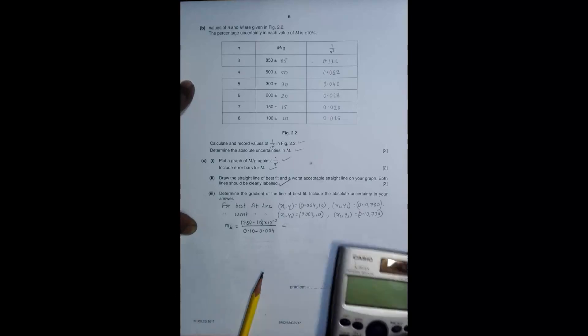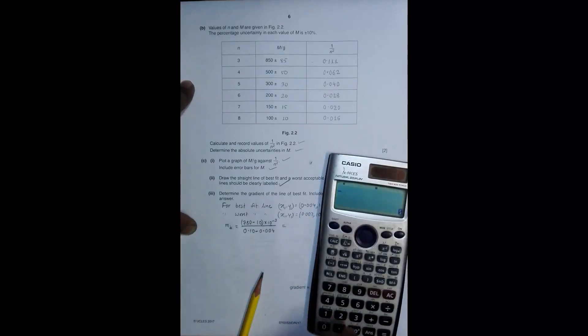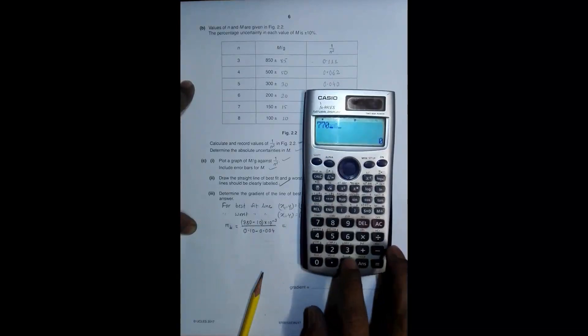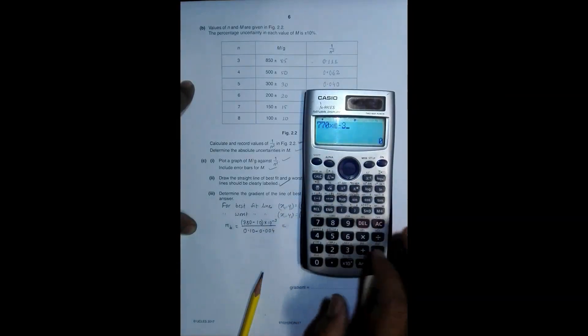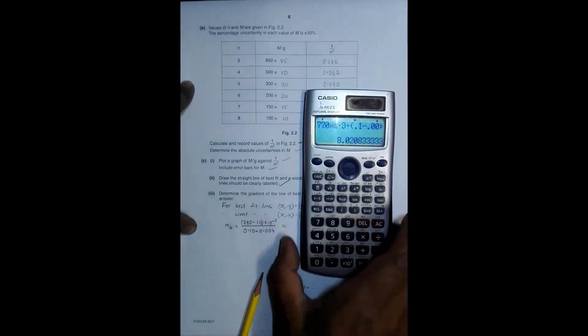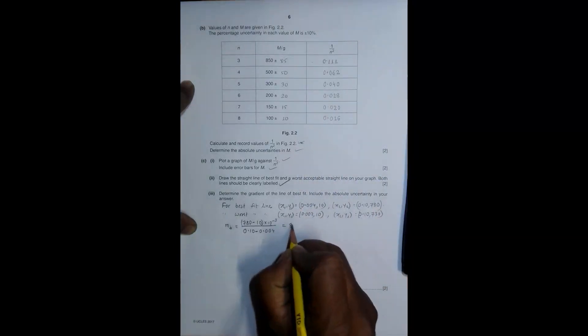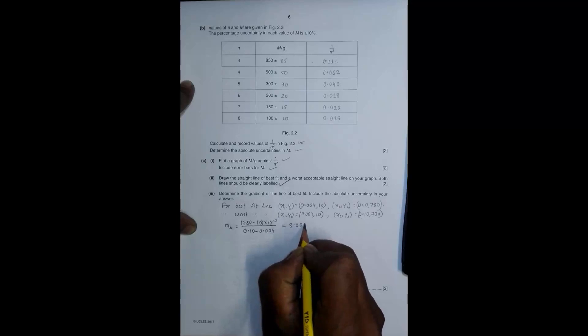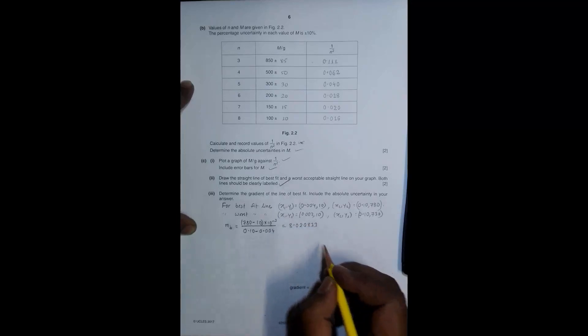The value will be equal to 770 exponent minus 3 divided by 0.1 minus 0.004. This will be equal to 8.020833. So I have used around 5, 6 significant figures.